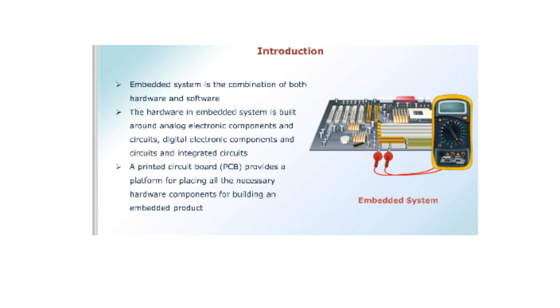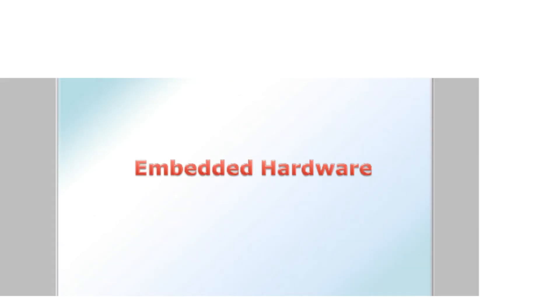Good morning students. Now we are going to learn about the second unit of embedded systems, that is embedded hardware. In the first chapter we have learned the different types of embedded systems and design of embedded systems — firmware, hardware, sensors, detectors, communications and interfacing.